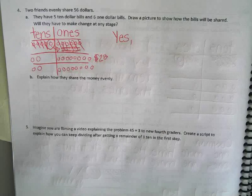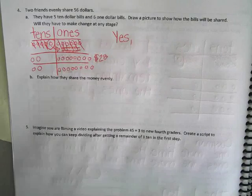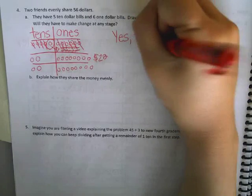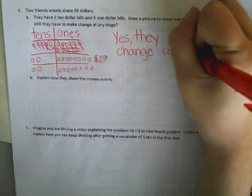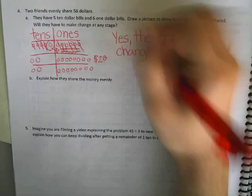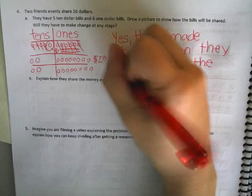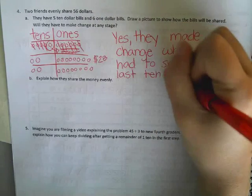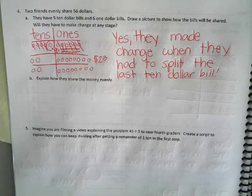They made change when they had to split the last $10 bill. And there's a second part to the same question — part B: explain how they share the money evenly.